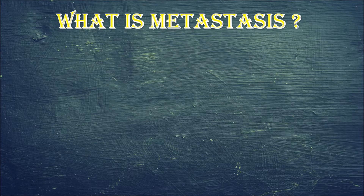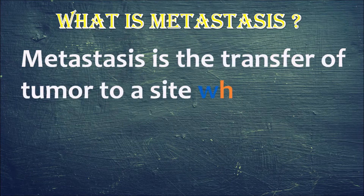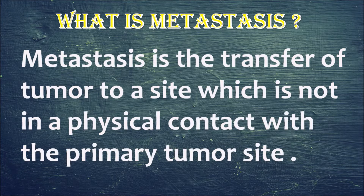Metastasis is basically the transfer of a tumor from one site to another, and the site to where it spreads is not in physical contact with the primary tumor site — that is, the site from which the tumor has spread. Now we will discuss about the various routes by which metastasis can spread, how the cancer cells spread.